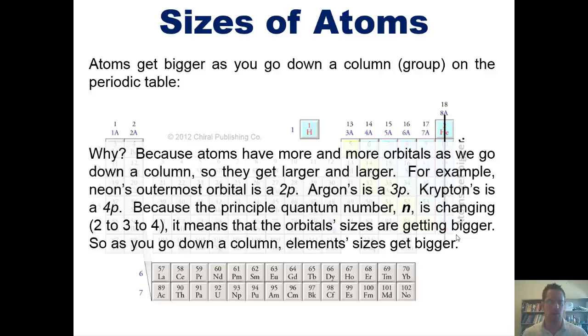For example, neon's outermost orbital is a 2p, while argon's, which is just below it, is a 3p. Krypton's, which is below argon, is a 4p. Because the principal quantum number n is changing, going from 2 to 3 to 4, it means the orbital sizes are getting bigger.